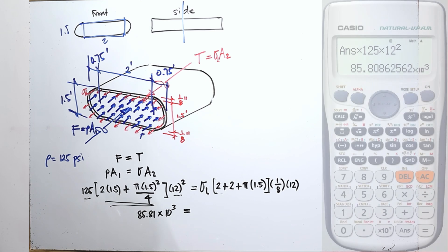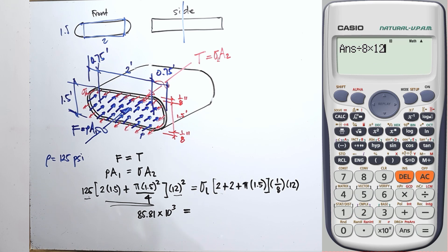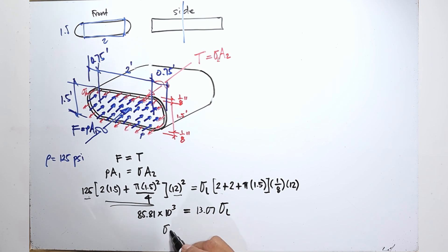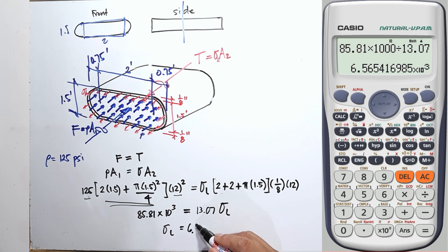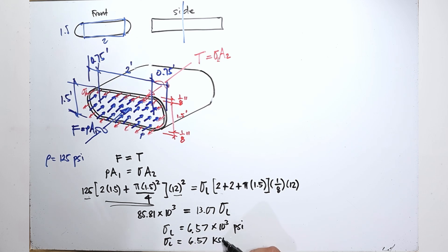For the right side: 2 plus 2 plus pi times 1.5, divided by 8, times 12 equals 13.07. So sigma L equals 85,810 divided by 13.07, which equals 6.57 times 10 to the power of 3 PSI, or 6.57 KSI. That is the longitudinal stress.